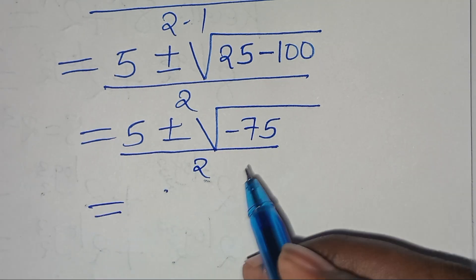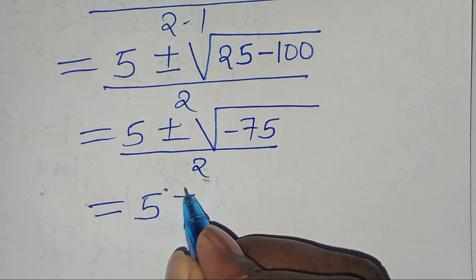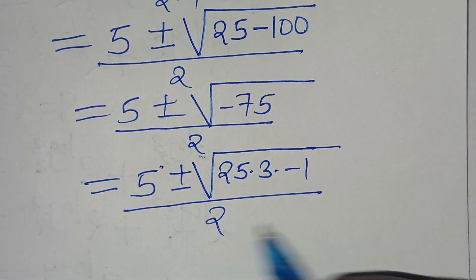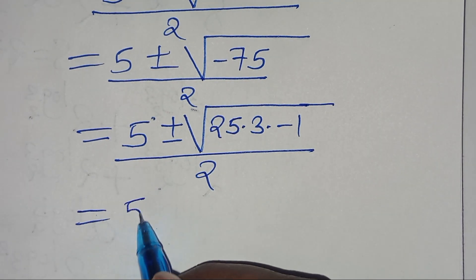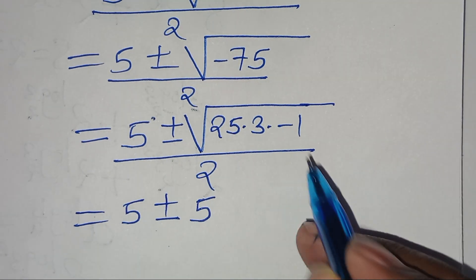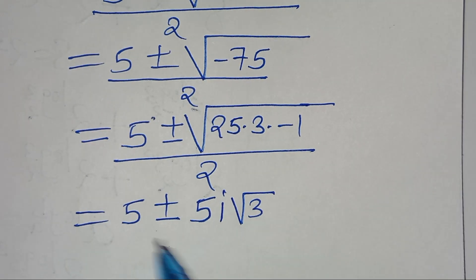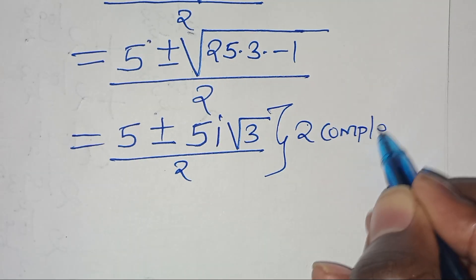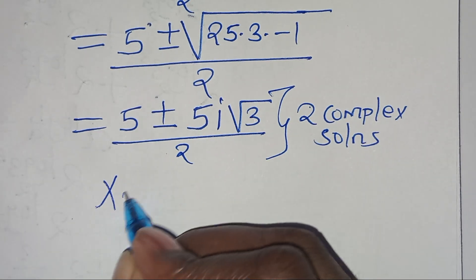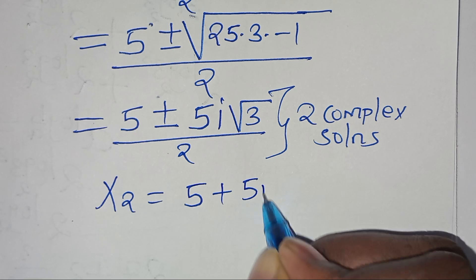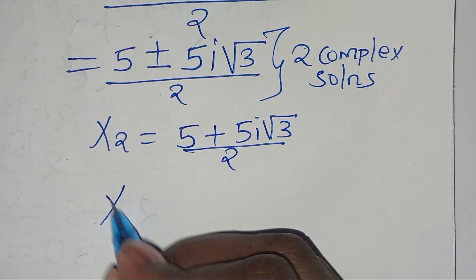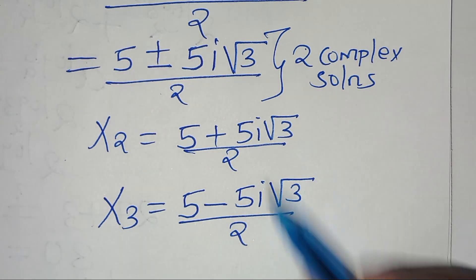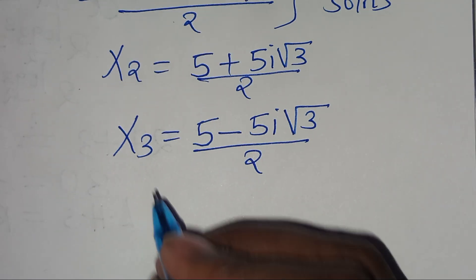We get 5 plus or minus the square root of 25 minus 100, which is minus 75, divided by 2. We express the square root of minus 75 as 25 times 3 times minus 1, so that gives 5 plus or minus 5i root 3, divided by 2. These are two complex solutions under case 1: x2 equals 5 plus 5i root 3 over 2, and x3 equals 5 minus 5i root 3 over 2.